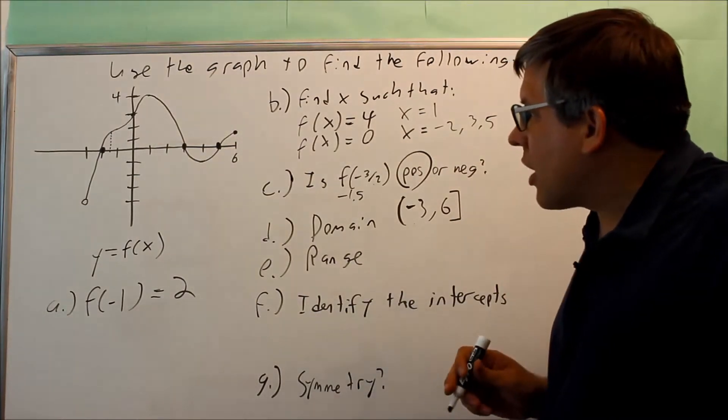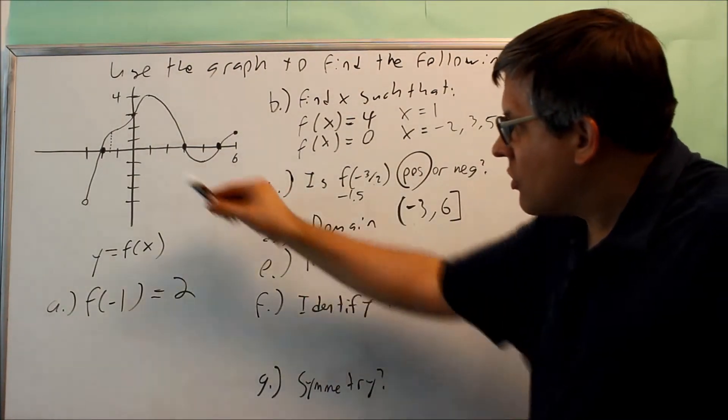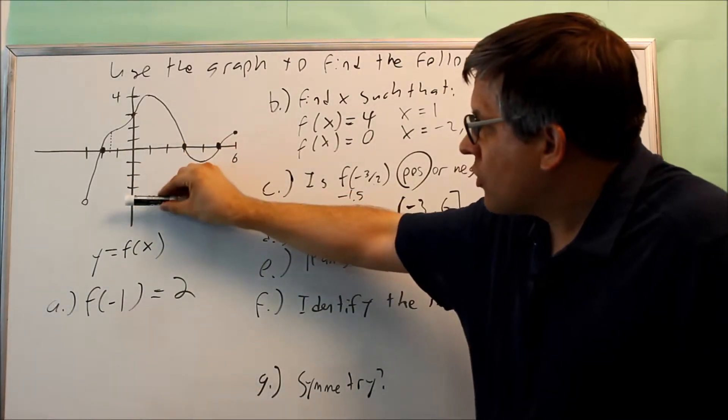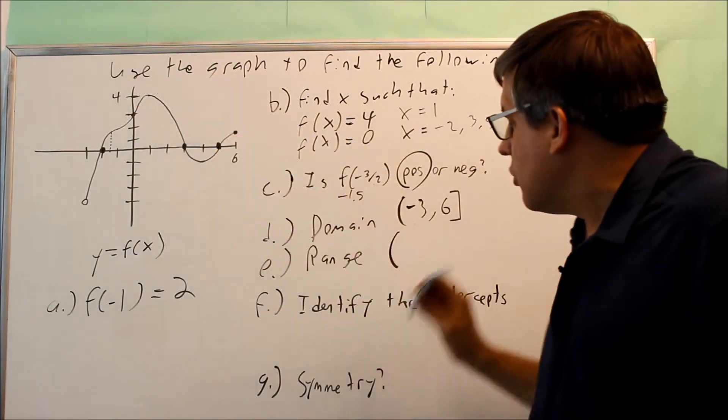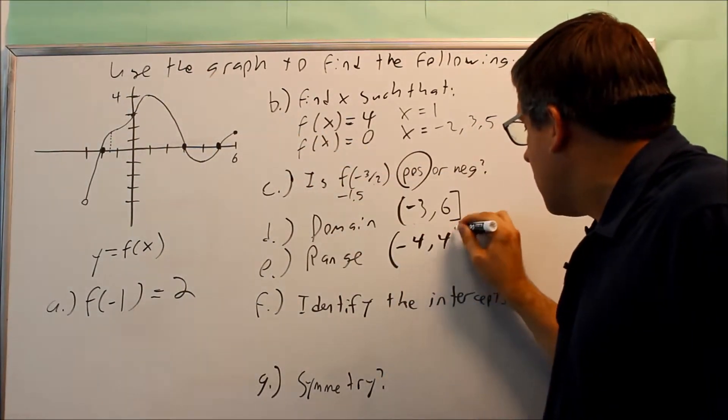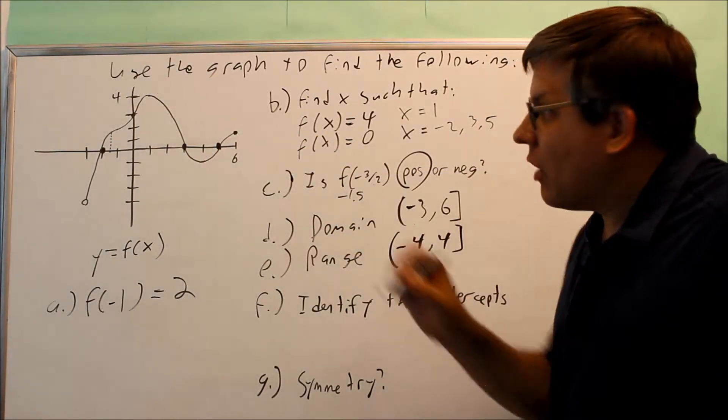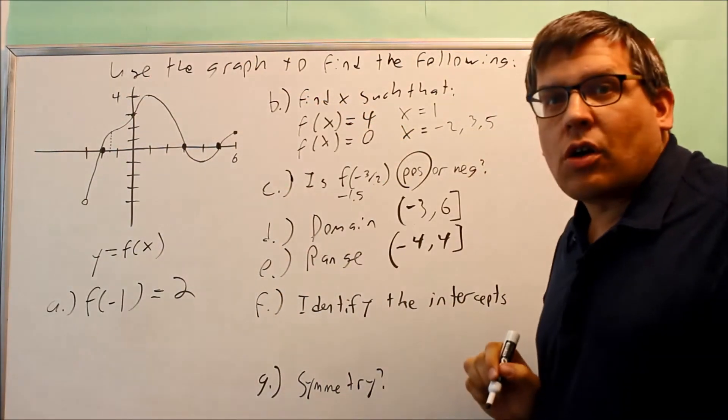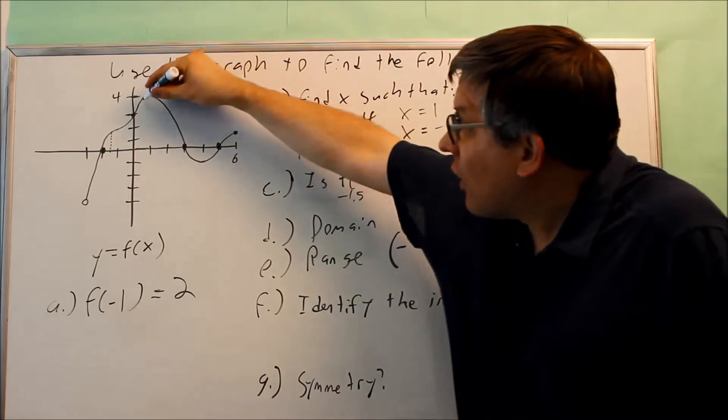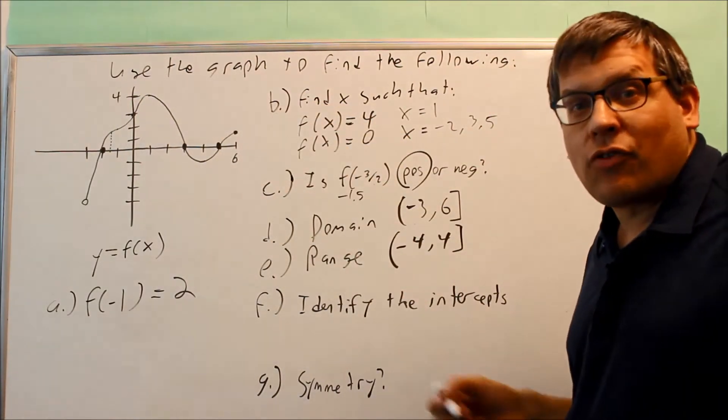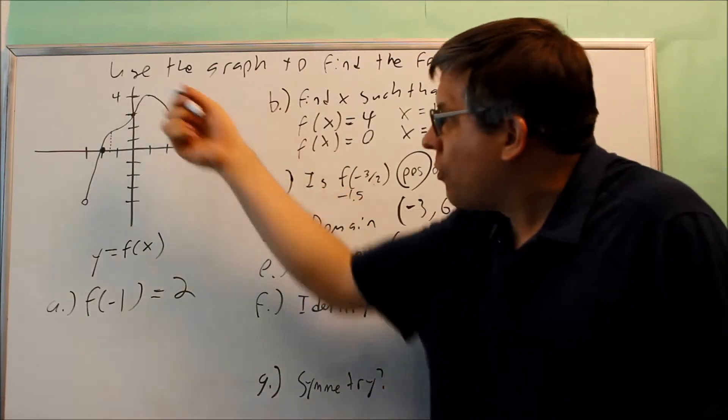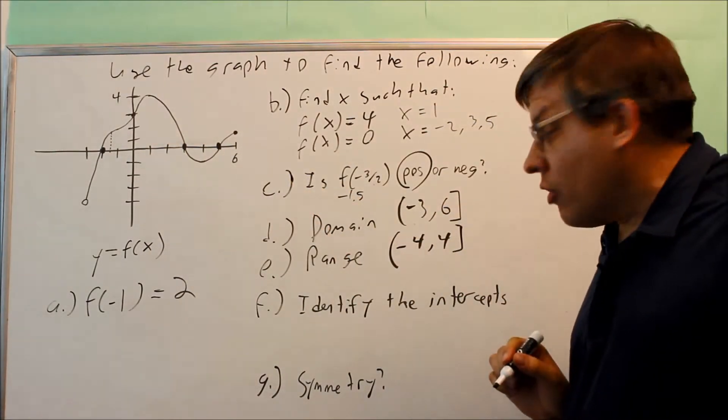For range, we're talking about the y values the graph uses. Now this one's also going to be a parenthesis because we have an open circle that goes from negative 4 all the way up to positive 4, and positive 4 is going to have a bracket. Now even though we don't have a closed circle up there, that point's still going to be included because it's on the graph. We have a solid line, which means that there is a graph, there is a number at that point. So that's why, since there's no open circle, that's why we're going to put a bracket on that one.